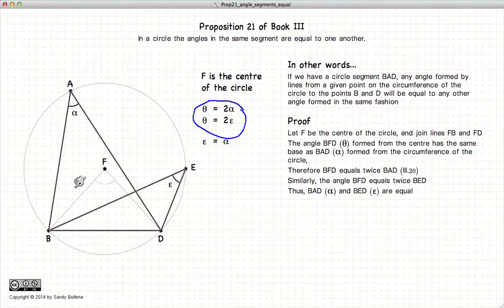Or that the two angles in the same segment, alpha and epsilon, are equal. And this can be shown for any angle defined by a point on the segment BAD. And thus we have demonstrated this proposition.